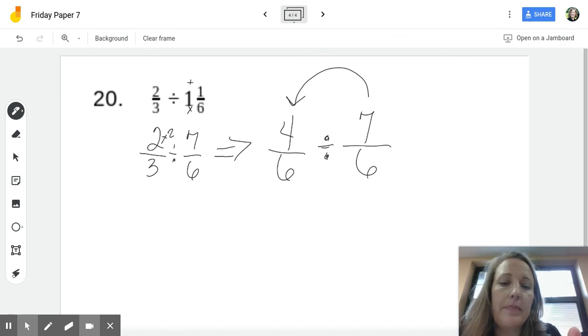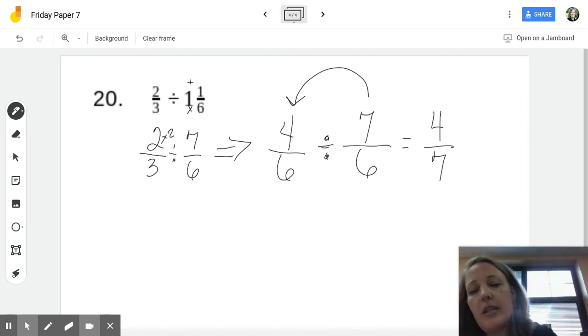Is it going to go in one time? No. It's going to go in. It's bigger, right? 7 sixths is bigger than 4 sixths. So let's see what it would be. Since these are common, we can actually just make this 4 divided by 7. And another way of writing that is 4 divided by 7, right? Okay, let's do the keep change flip. See if we get the same thing.